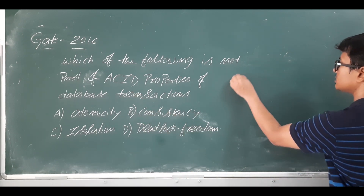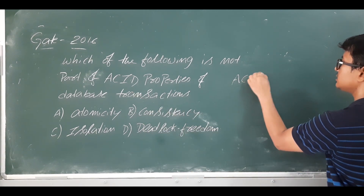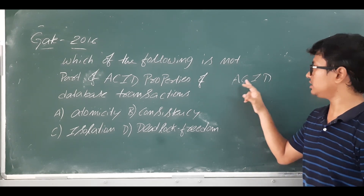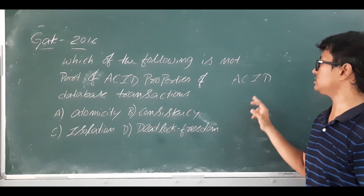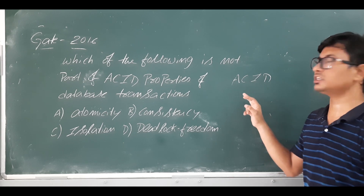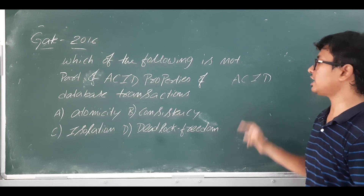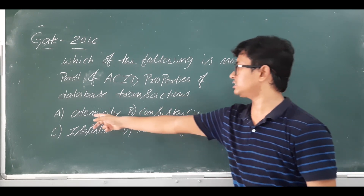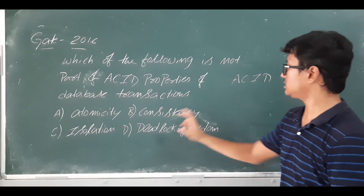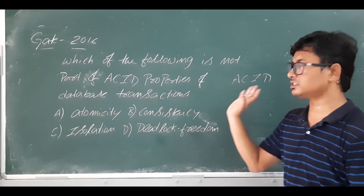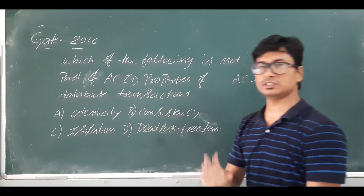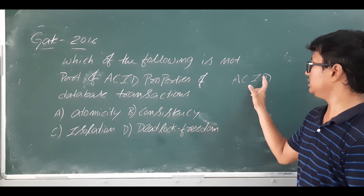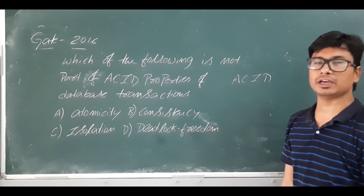ACID stands for: A - atomicity, C - consistency, I - isolation, and D - durability. In the options given, A for atomicity is correct, C for consistency is correct, and I for isolation is also correct. However, D has been given as deadlock freedom.